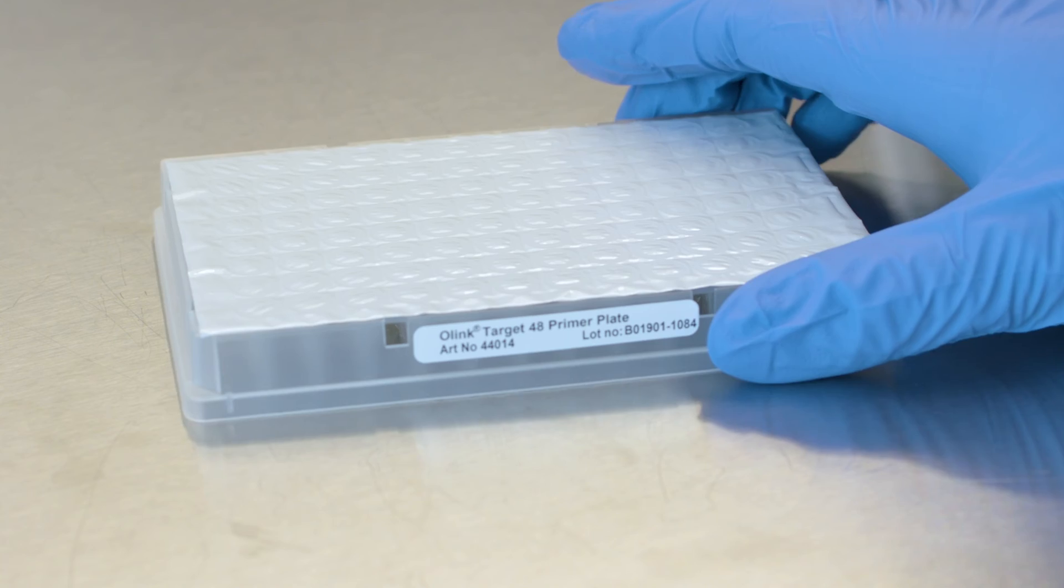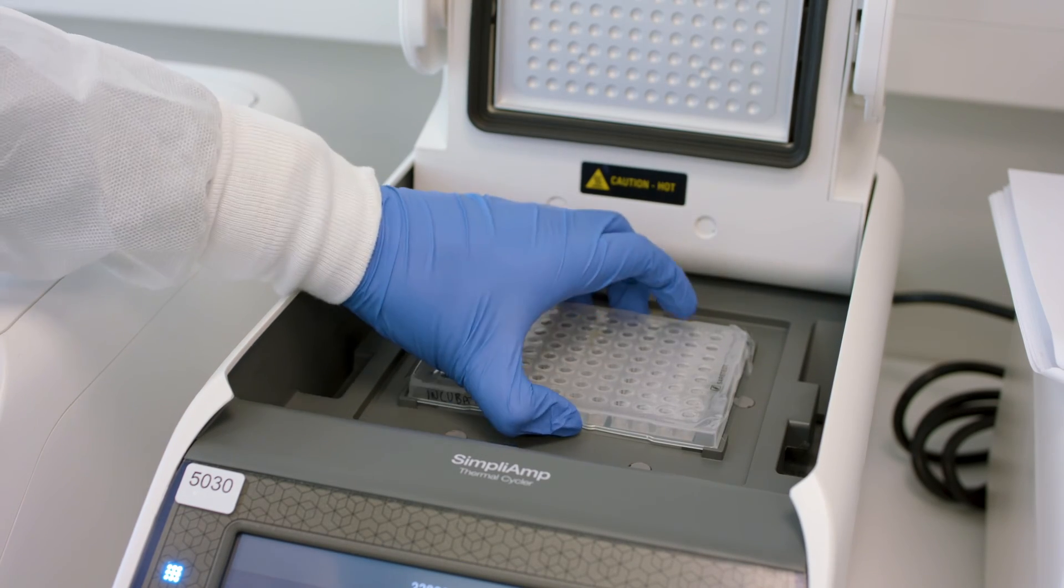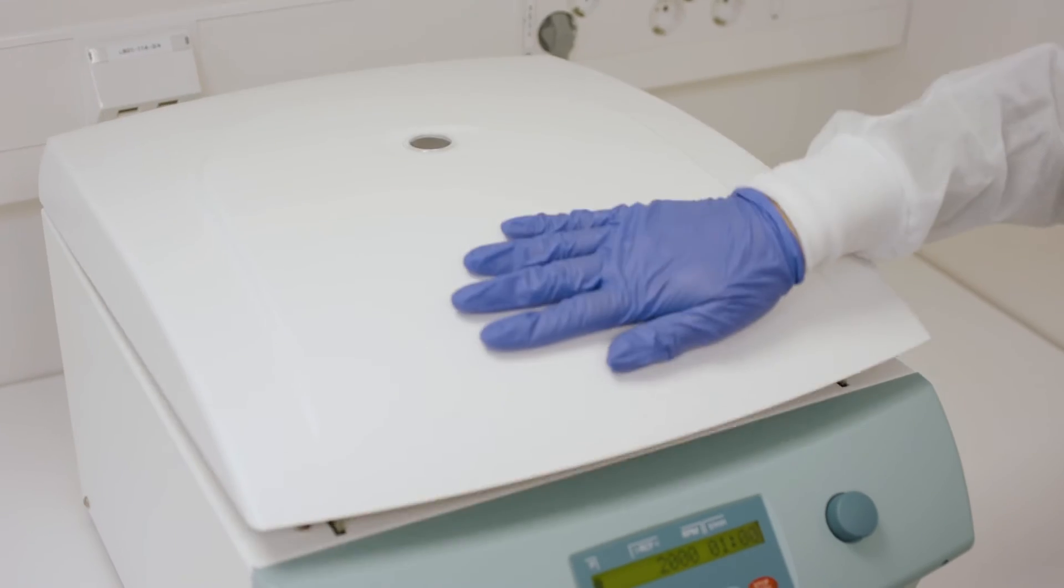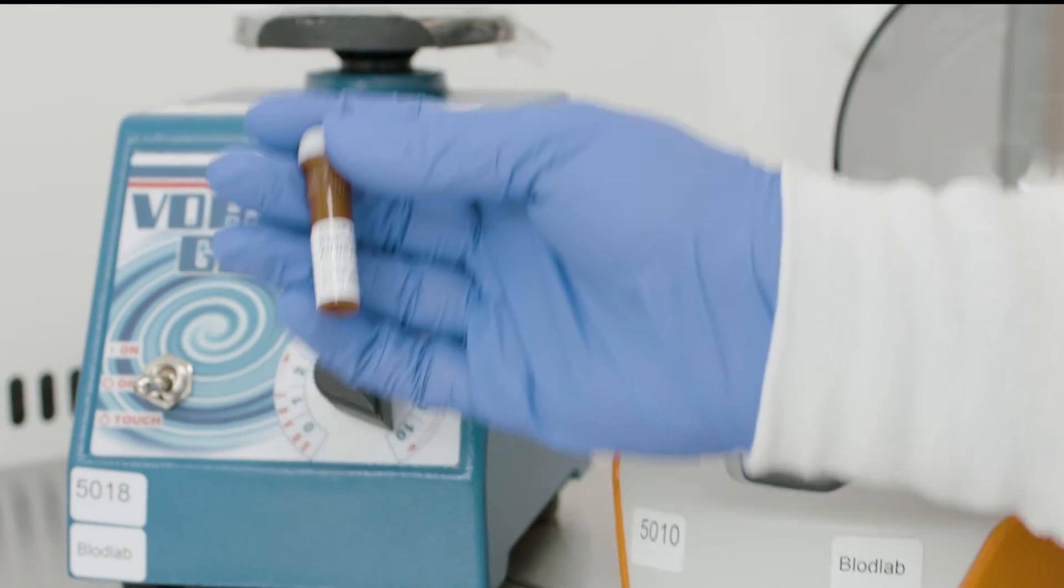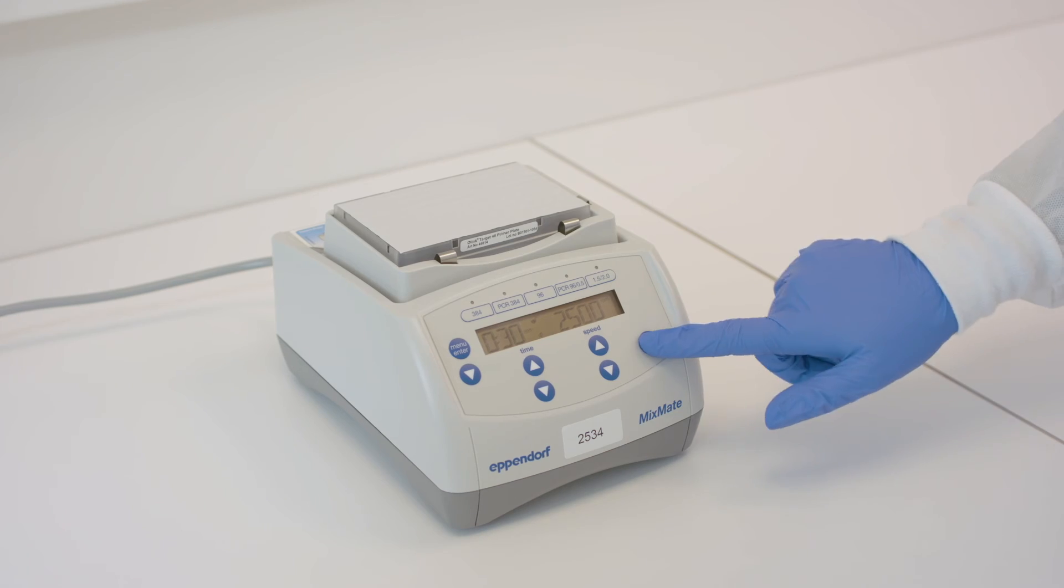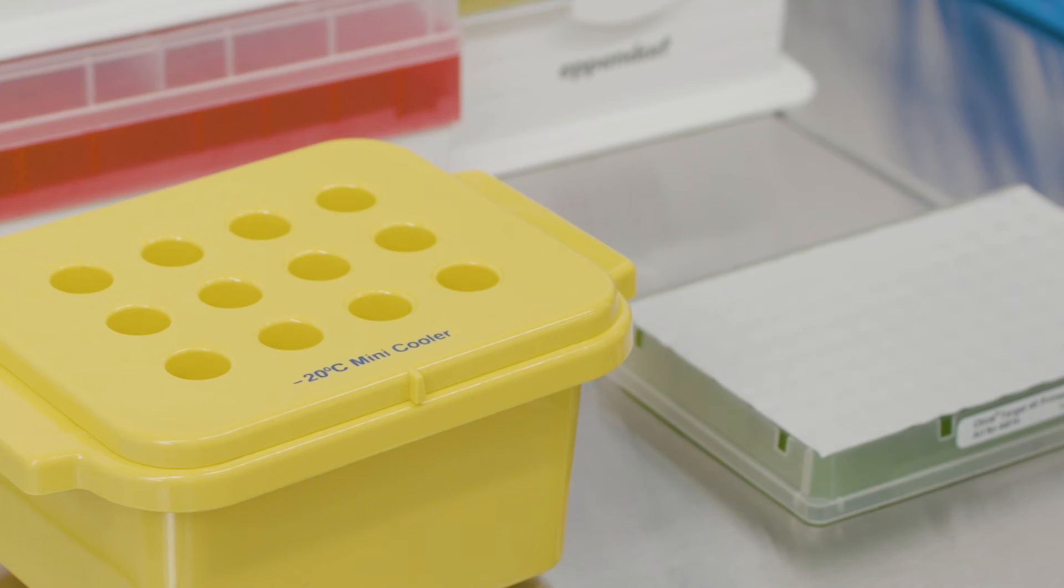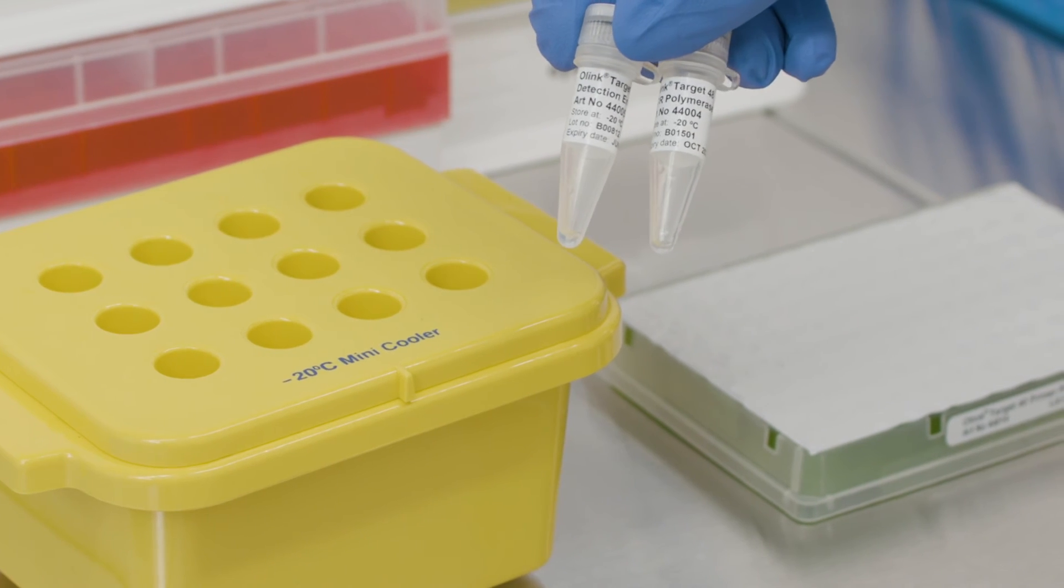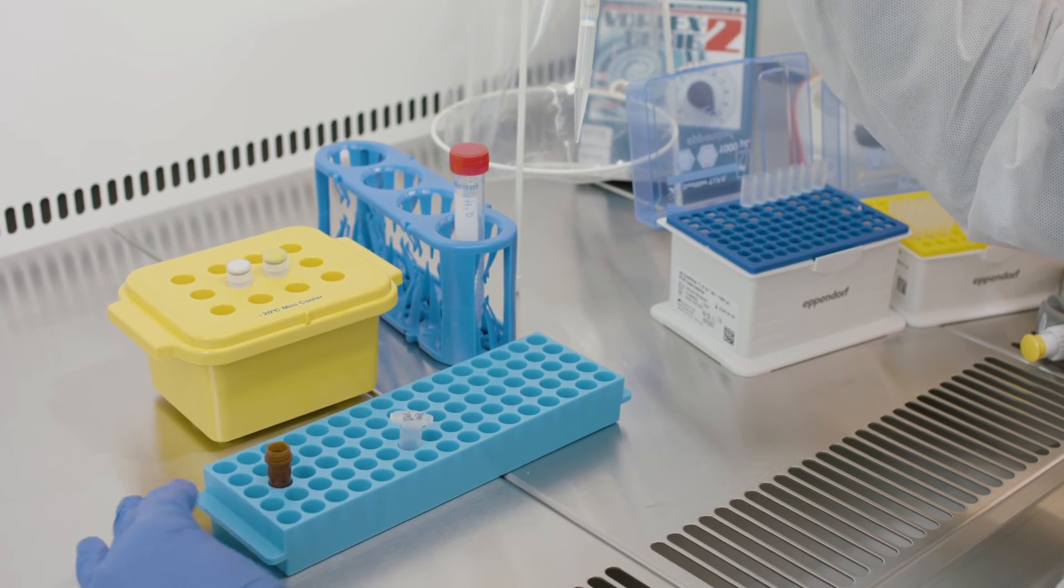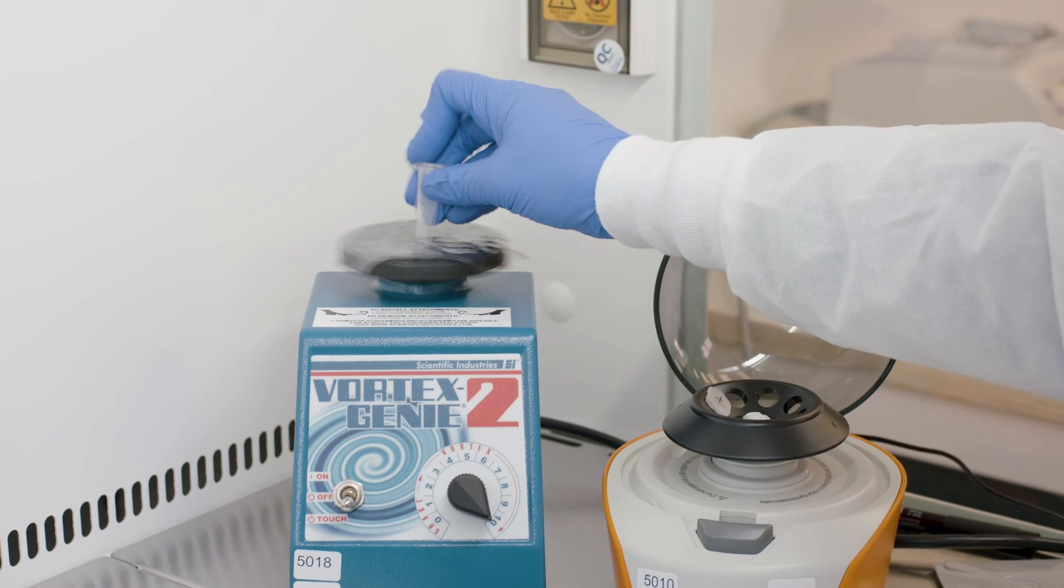Thaw the primer plate. Remove the incubation plate containing the PCR product from the PCR instrument. Vortex and spin down the content. Thaw the detection solution, and vortex and spin down the detection solution and primer plate. Bring out the detection enzyme and PCR polymerase, and remember to place them on a freezing block. And prepare the detection mix in a microcentrifuge tube according to Olink user manual.